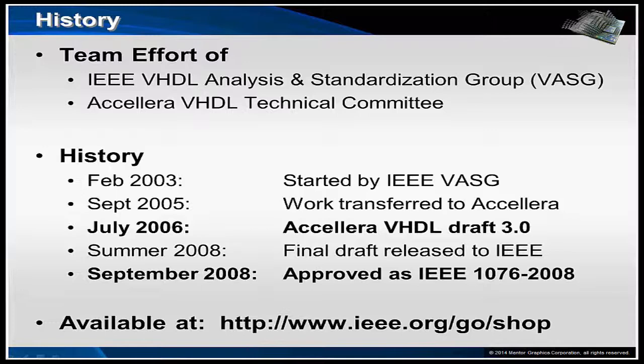IEEE 1076-2008 started in February 2003 by the IEEE VASG Working Group. In September of 2005, the work was transferred to Accellera. In July of 2006, the Accellera Board approved draft 3.0 of the VHDL Standard. In summer of 2008, Accellera released its final draft to IEEE for balloting. In September of 2008, the IEEE Board approved the balloted draft of 1076, and it became IEEE 1076-2008.